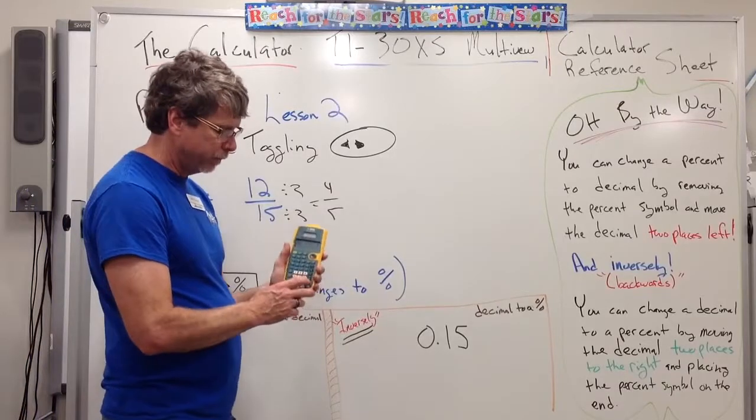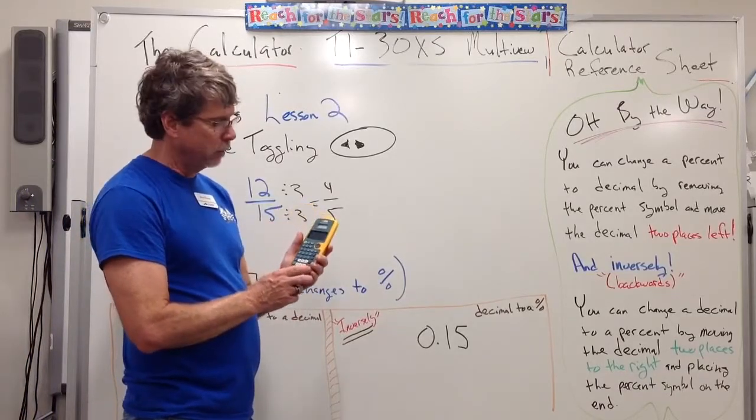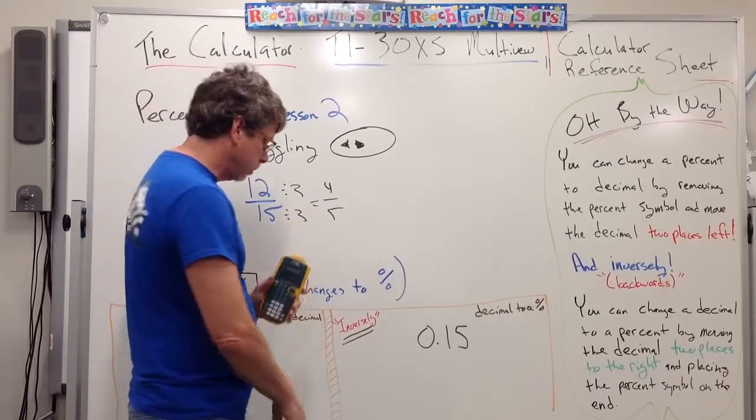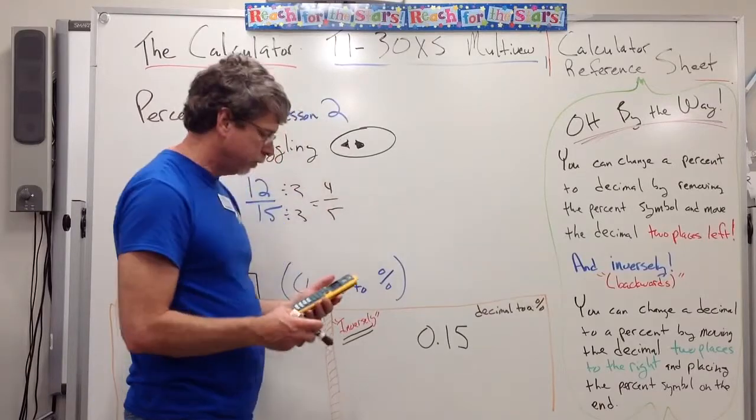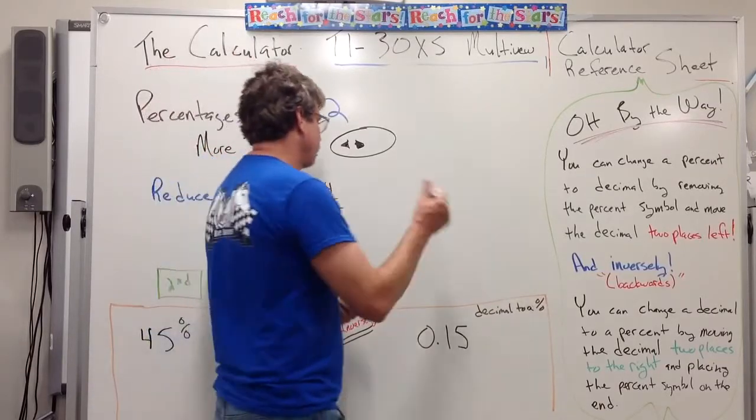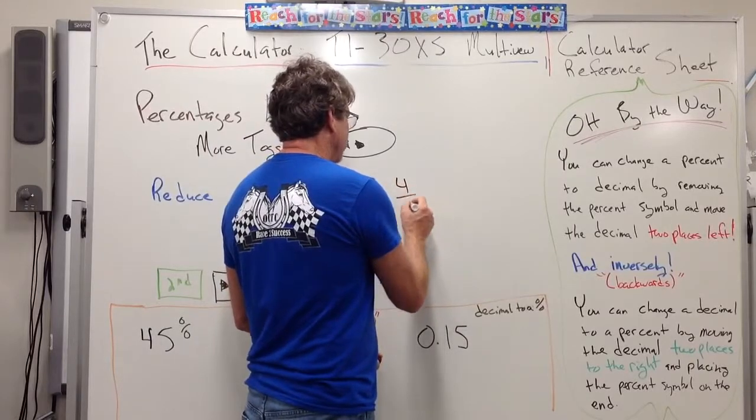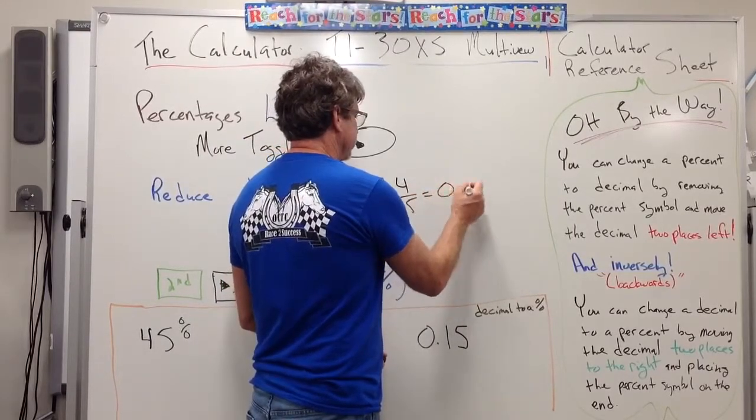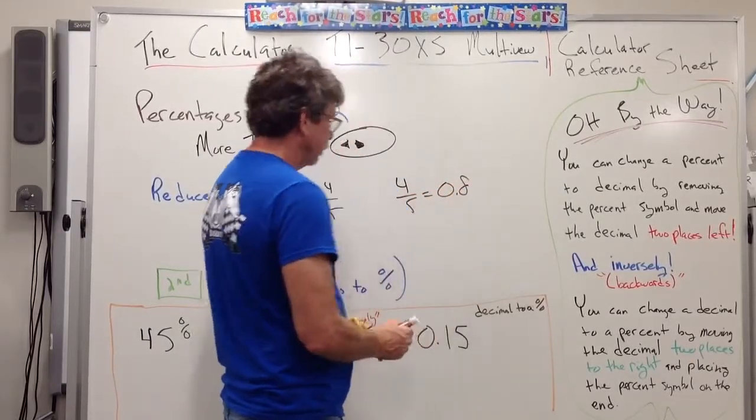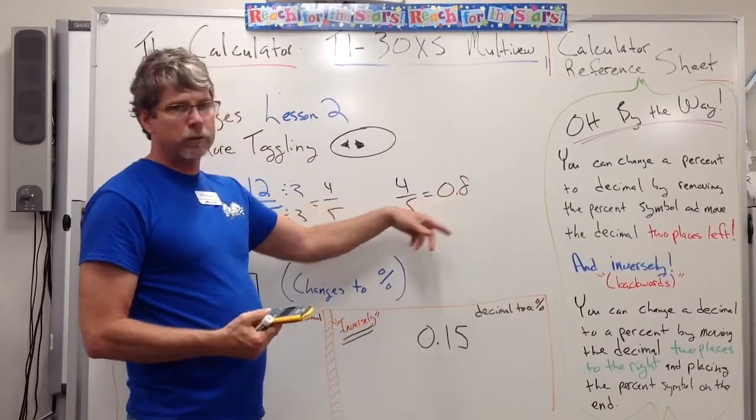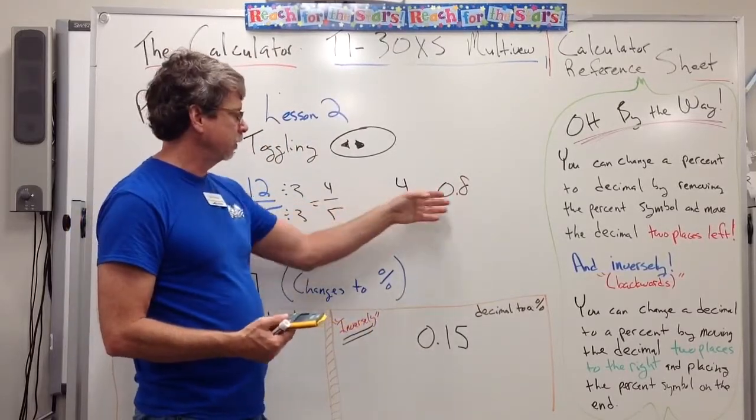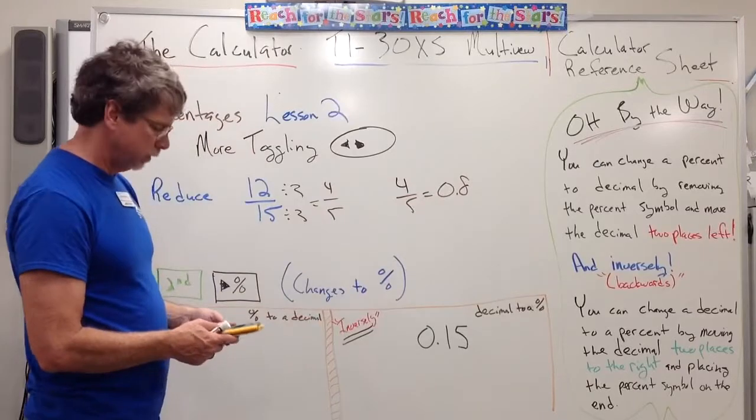Also, if you want, if you hit the toggle button again, it will change it to that decimal. I think we mentioned that before. So 4-5ths is the same thing as 8-tenths. So those are our equivalents. Those are interchangeable. Remember, since that's the tenths place, we would say 8-tenths. So 4-5ths is the equivalent to 8-tenths.